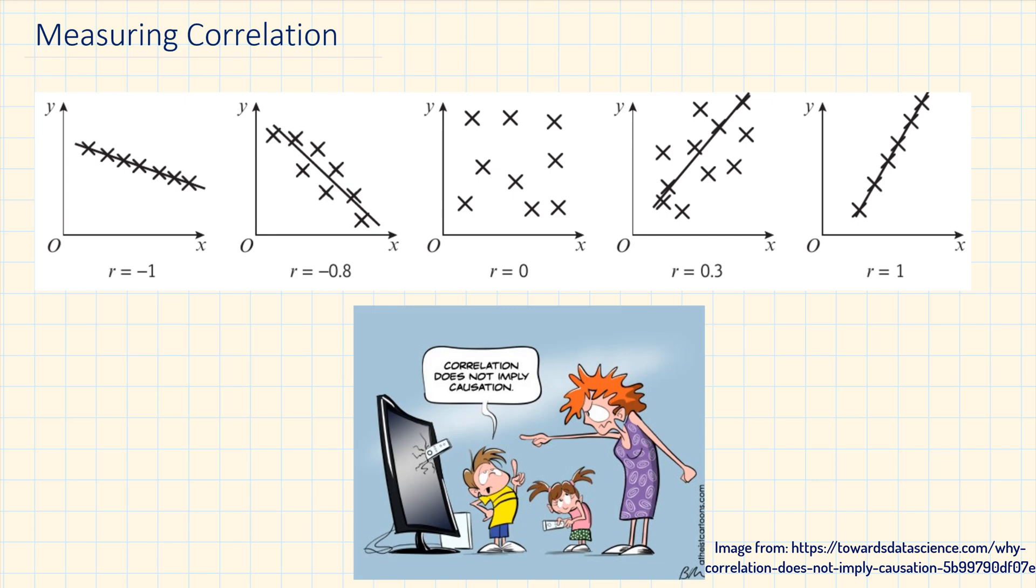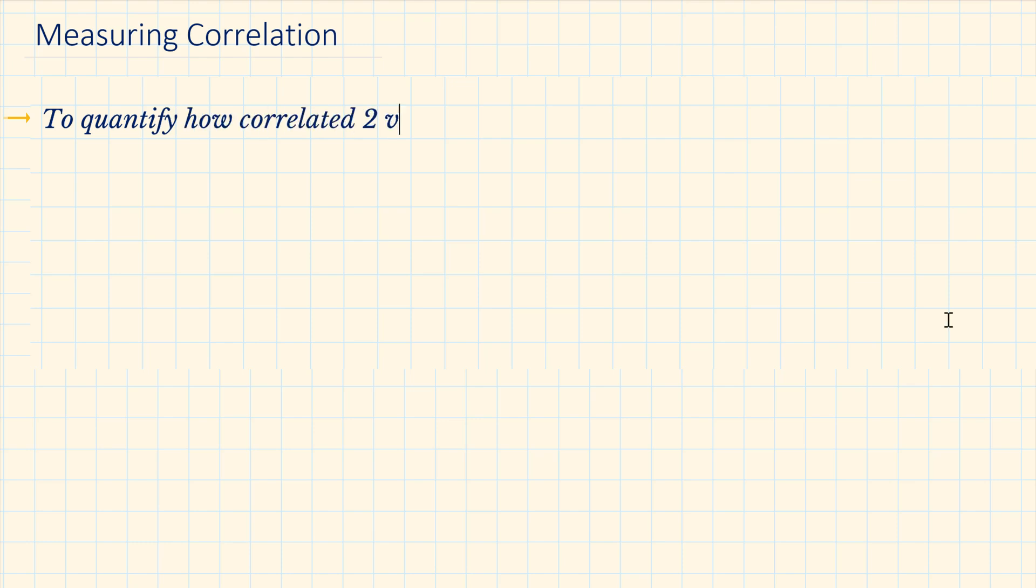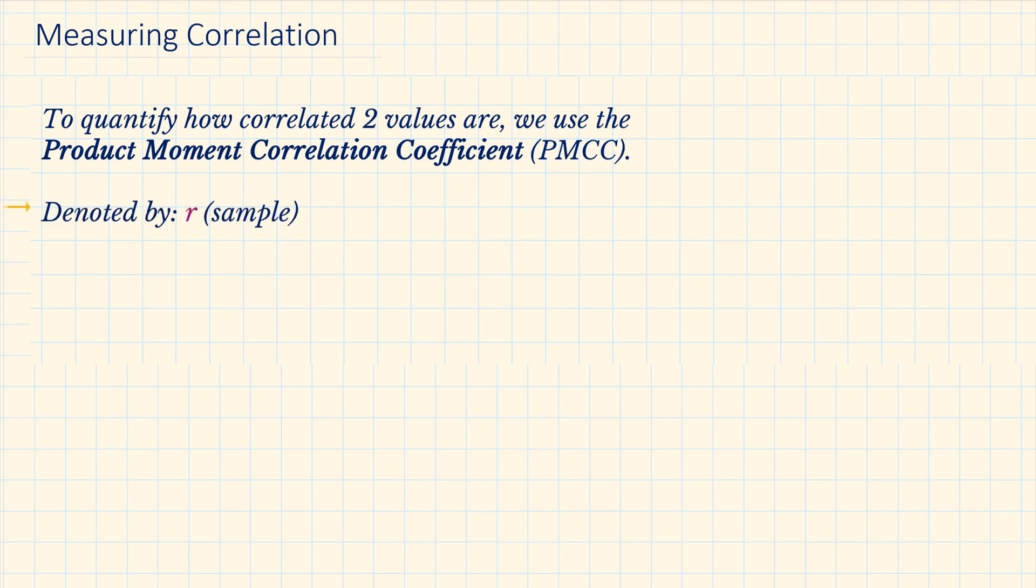Hi, in this video we will learn about measuring correlation. To quantify how correlated two values are, we use the product moment correlation coefficient. The product moment correlation coefficient or PMCC for a sample of data is denoted by the letter R.